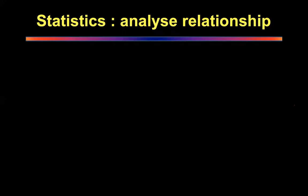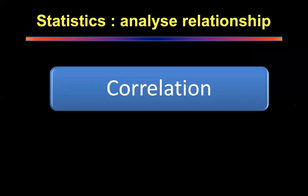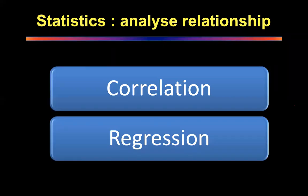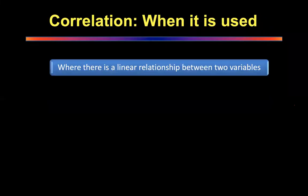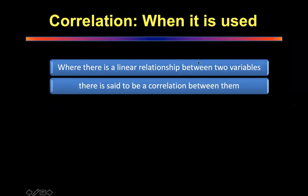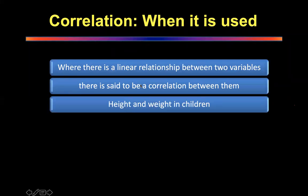Out of seven topics we have now covered four. The next topic is statistics that analyze relationships — correlation and regression. When there is a linear relation between two variables, there is said to be a correlation between them. A simple example: if blood sugar goes up, HbA1c goes up — positive correlation. Other examples: height and weight in children show correlation; lower socioeconomic class correlates with higher mortality — a reverse (negative) correlation. Correlation can be both positive (both go up together) or negative (one goes up, the other goes down).